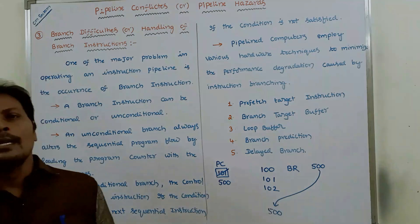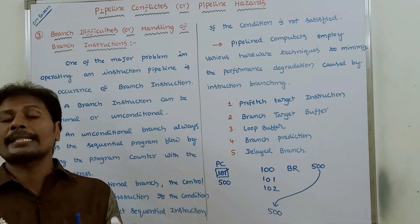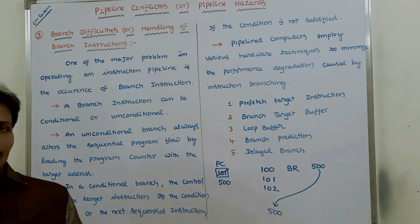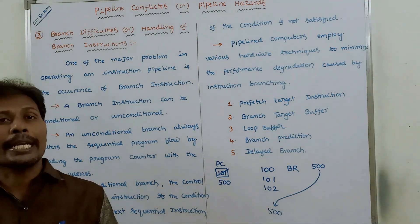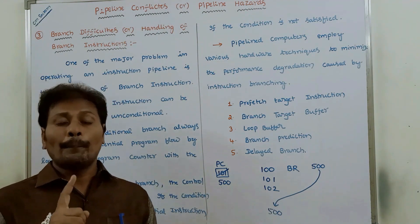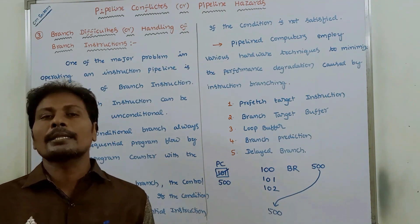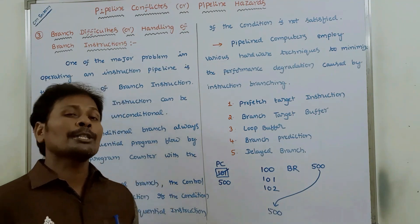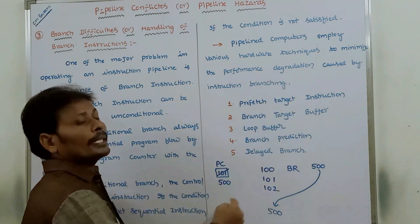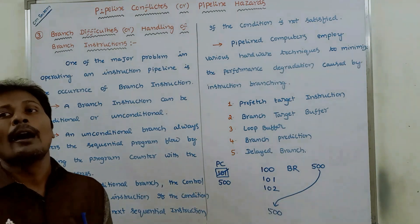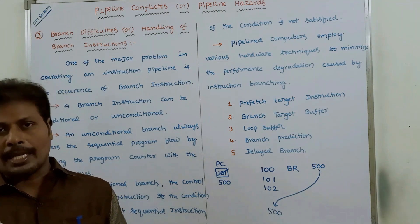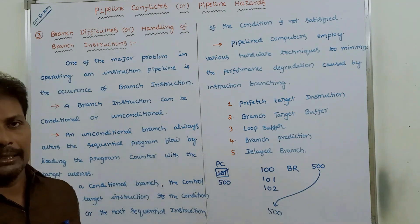Pipelined computers employ various hardware techniques to minimize the performance degradation caused by instruction branching. There are five hardware techniques: first is pre-fetch target instruction, second is branch target buffer, third is loop buffer, fourth is branch prediction, and fifth is delayed branch. Using these five techniques, we minimize the performance loss caused by branch instructions in the pipeline.